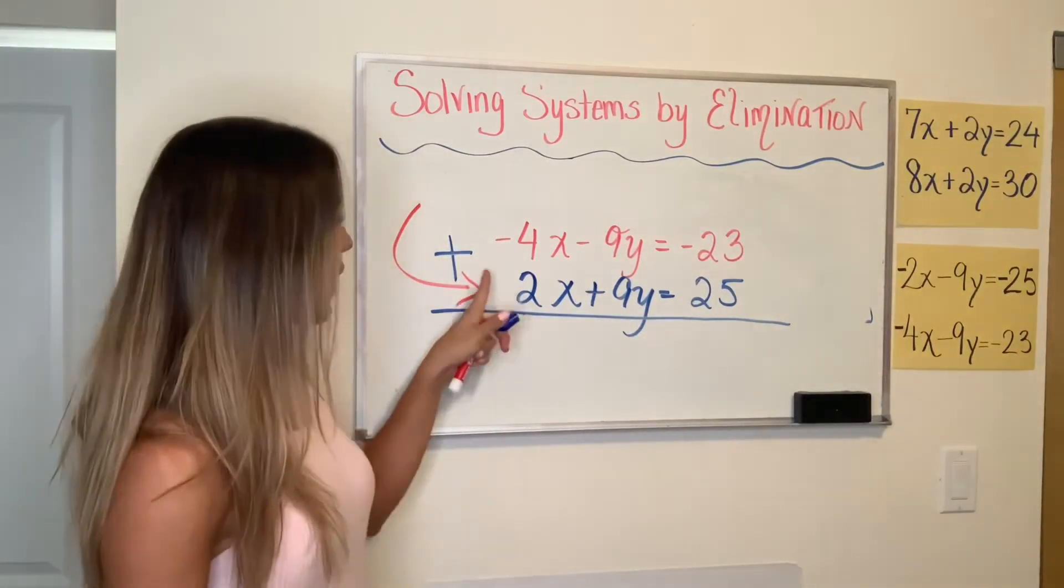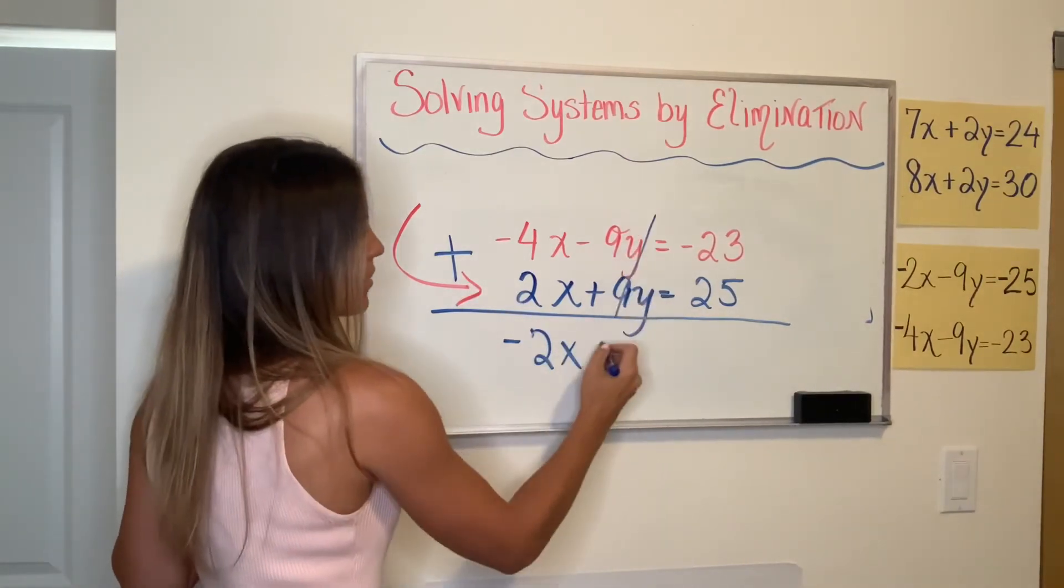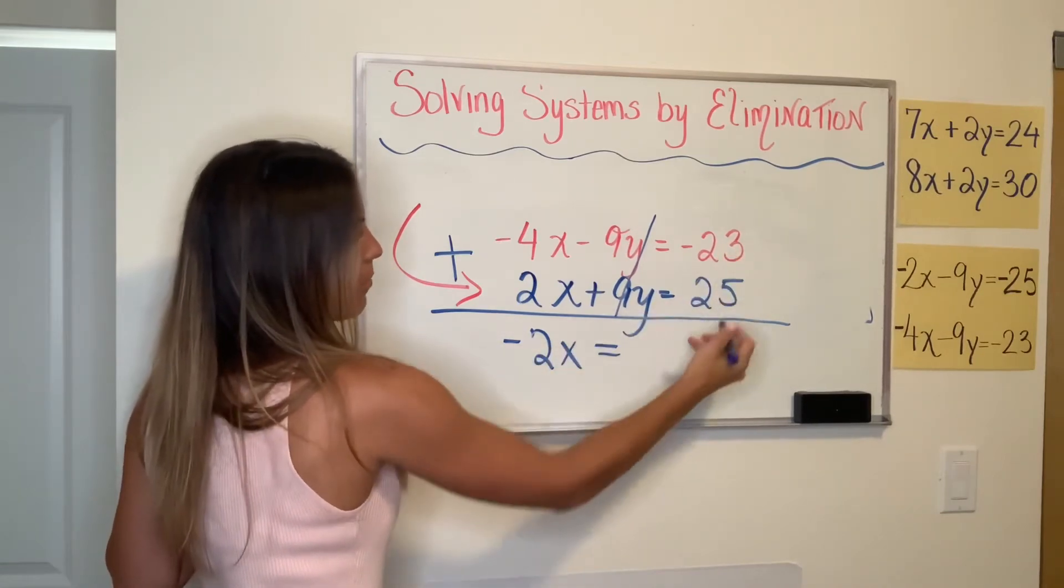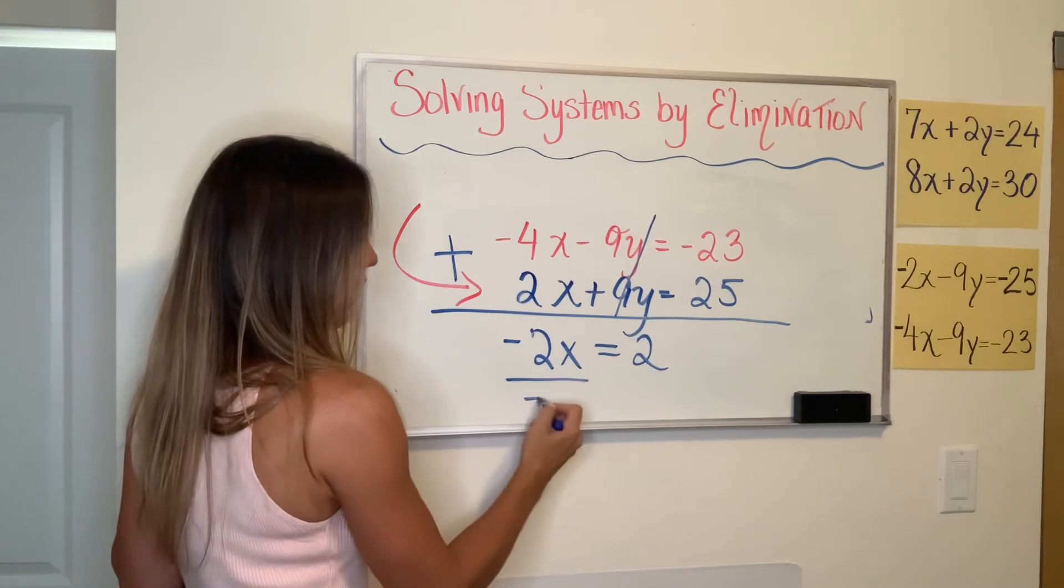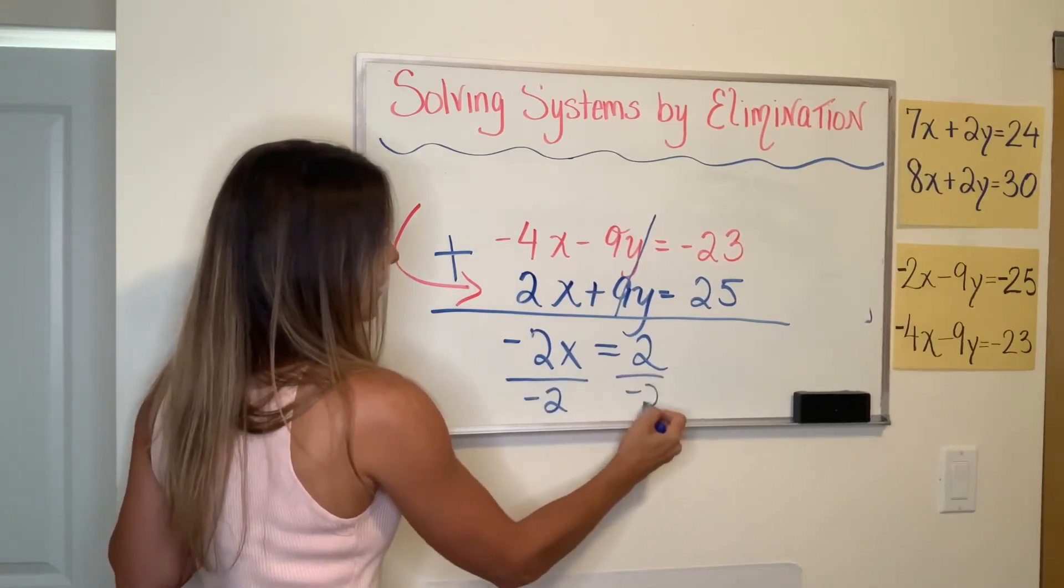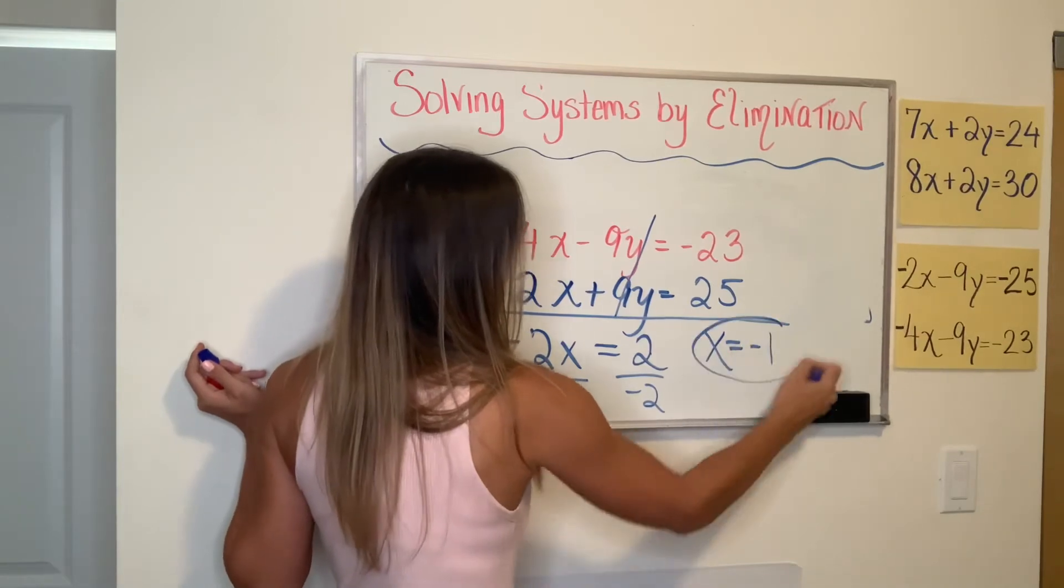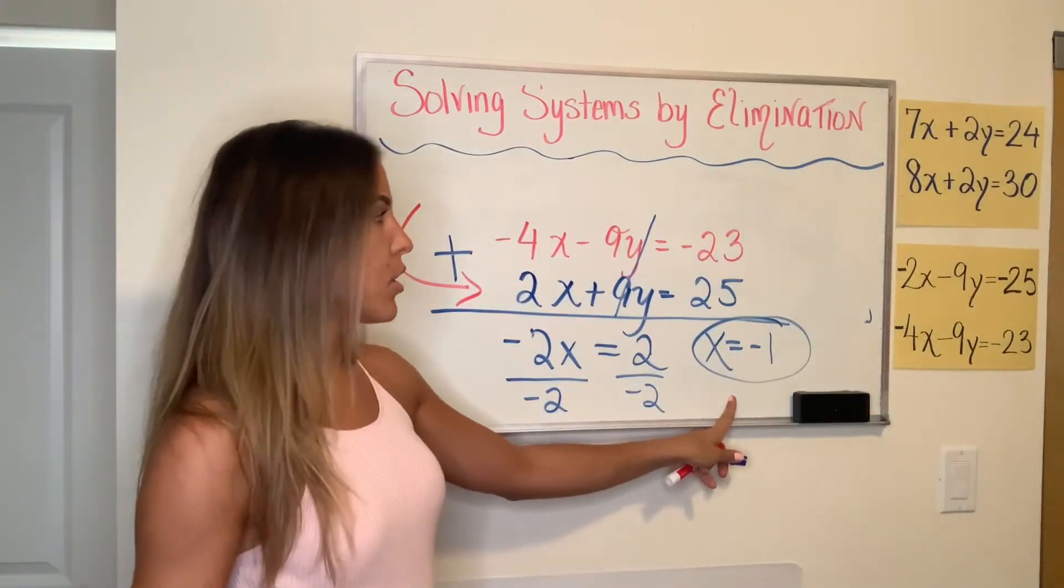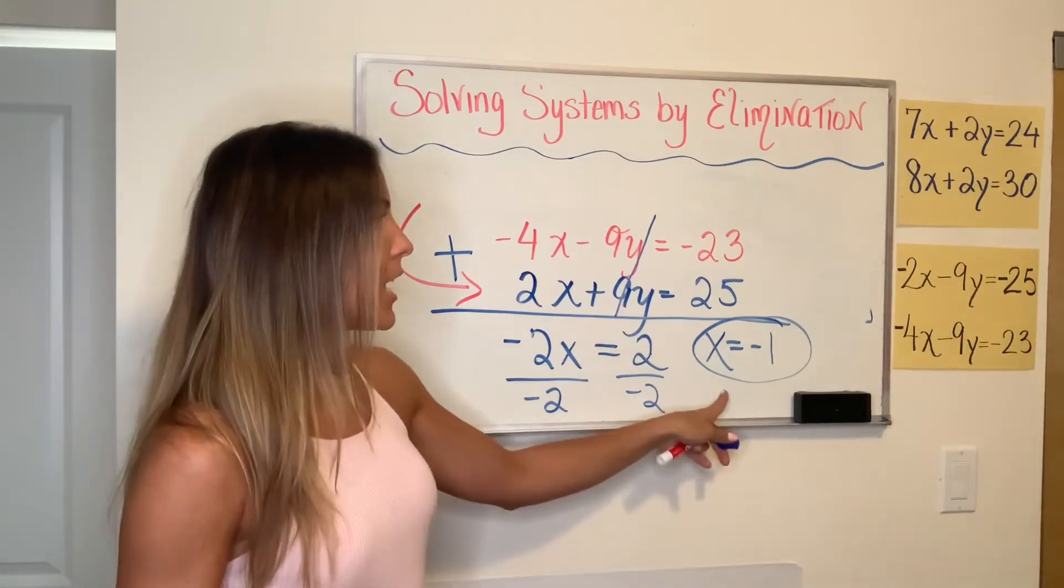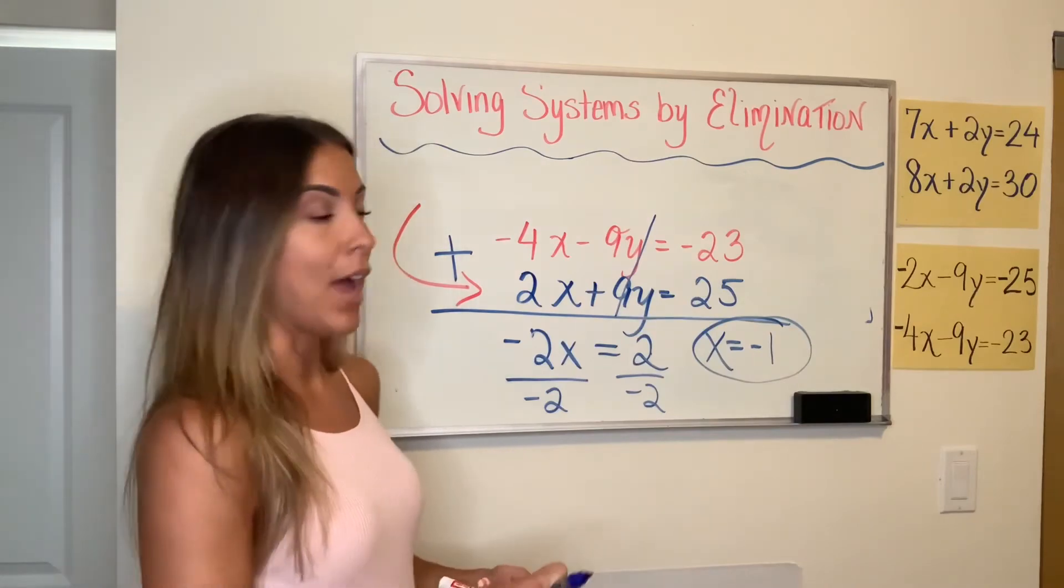So negative 4X plus 2X, negative 2X. Negative 9Y plus 9Y cancels out. Negative 23 plus 25 is 2. To get that X alone, I'm going to divide by negative 2 on both sides. 2 divided by negative 2 is negative 1. So there's the X value of my solution. And now as always, the same process repeats. I take that X, I go into either one of these equations, and that will give me my Y value.